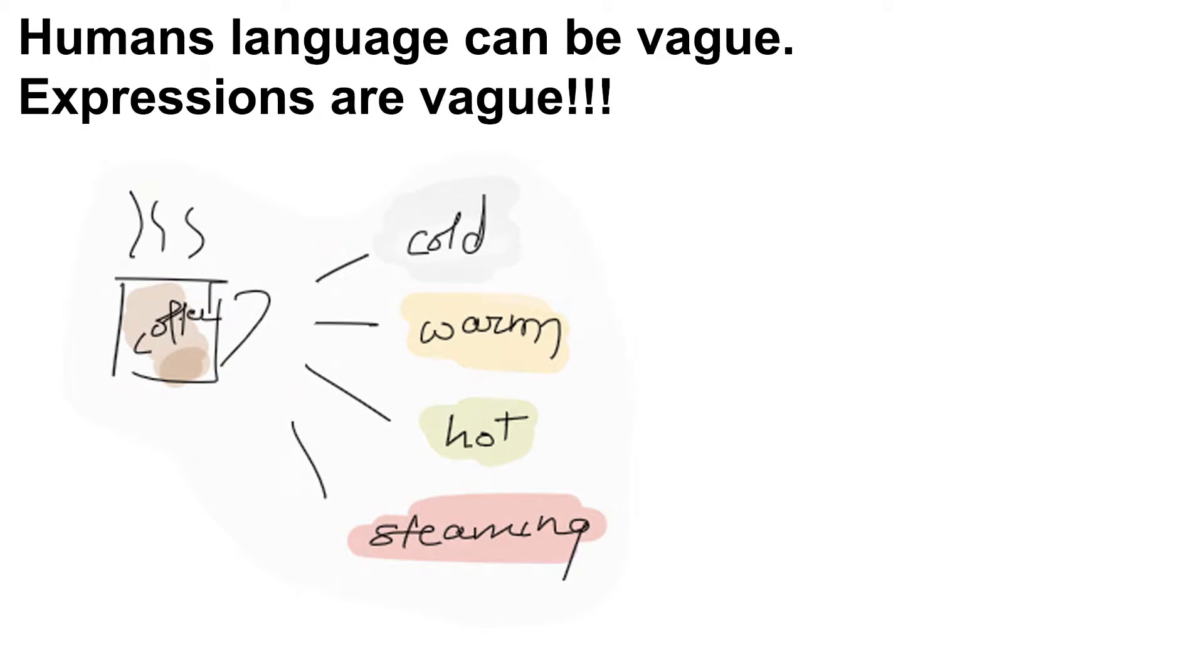Human language is vague, and most daily expressions are vague. Coffee can be cold, warm, hot or steaming. Likewise, it can be strong or mild. Human language is fuzzy.